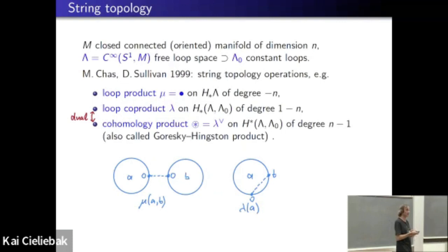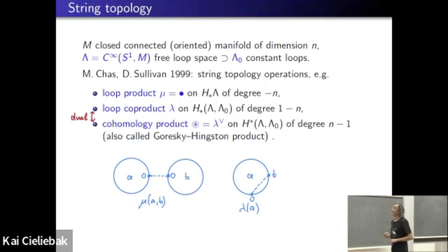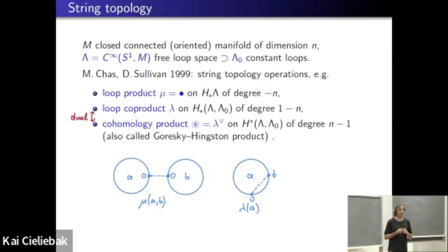A brief recap: in the case of a based loop space where you fix a base point and take loops starting and ending there, algebraic structures on its homology were very well understood going back to the 1950s, with work of Heinz Hopf and others. The based loop space is an H-space, and its homology is a Hopf algebra — that's a very old, well-understood story. In the case of the free loop space, nothing much was known until 1999, when Chas and Sullivan wrote down a whole bunch of operations in a marvelous paper.